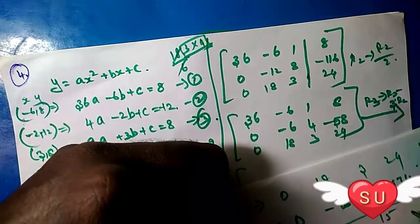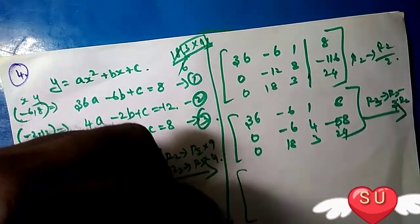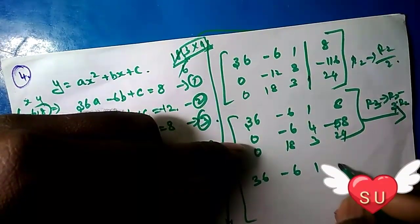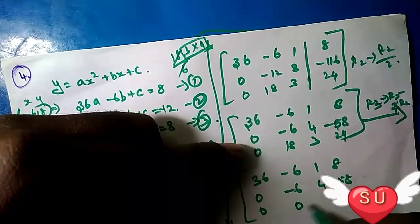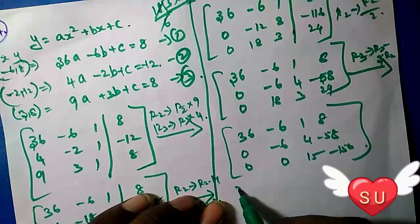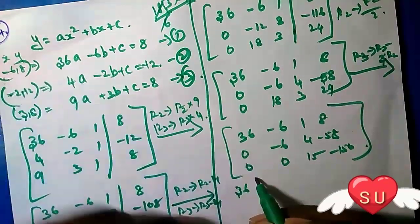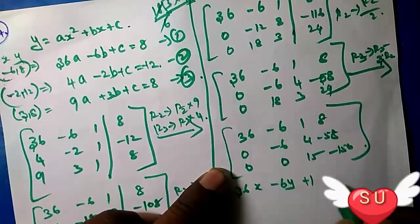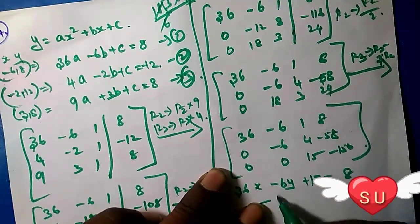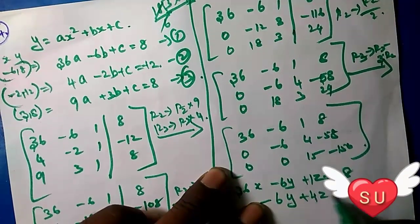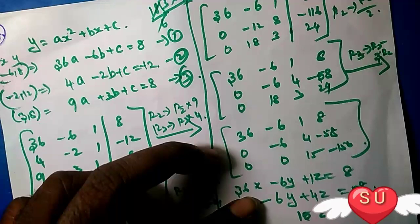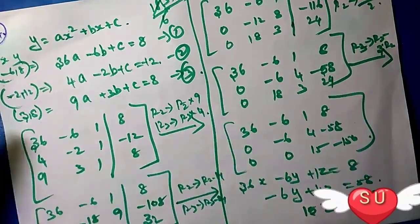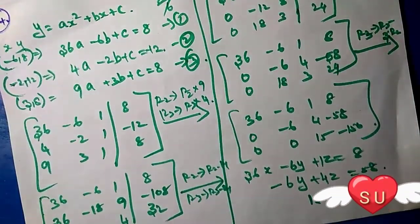After operations, we get: 36a - 6b + c = 8 in the first equation, -6b + 4c = -58 in the second, and 15c = -150 in the third equation.